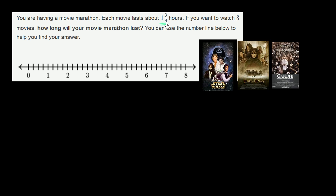Each movie lasts 1 and 3 fourths hours long. Let's say the first movie is Star Wars, which I'd probably include in any movie marathon. It's going to be 1 and 3 fourths hours long. This is 1, and then we're going to have 3 fourths more. Each of these are a fourth, because we have four sections between 1 and 2.